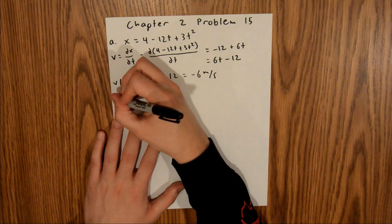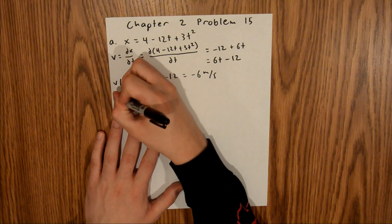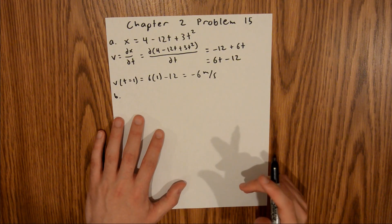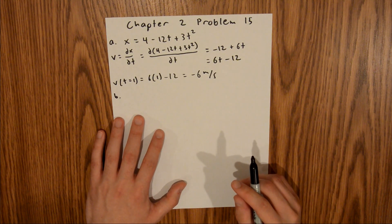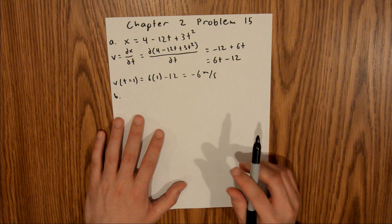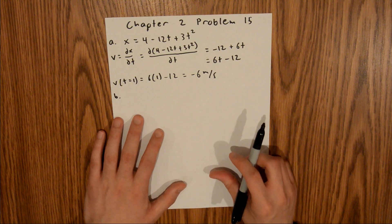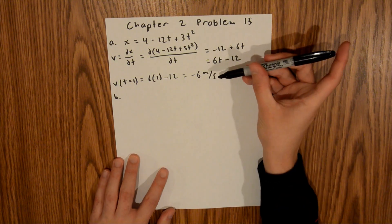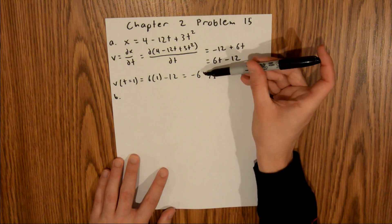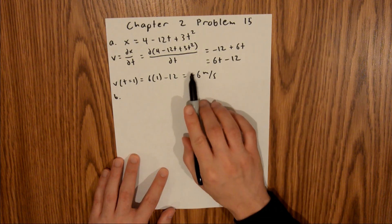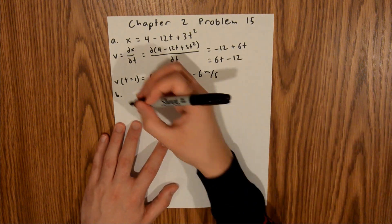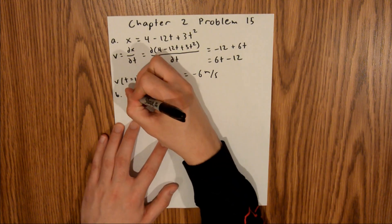For part B, we are asked if it is moving in the positive or negative direction of x at time t equals 1. We just found that our velocity is negative 6 meters per second, and since we have this negative sign, that means it is moving in the negative x direction.